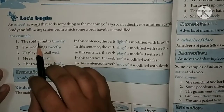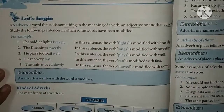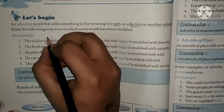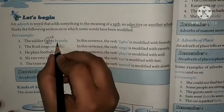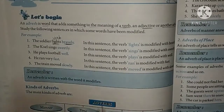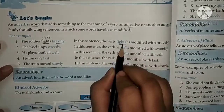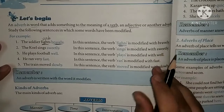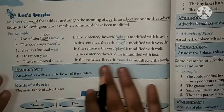Following are the examples. First sentence: 'The soldier fights bravely.' The action is 'fights' — that is the verb. The soldier fights — how? Bravely. So 'bravely' tells us about the verb 'fights'. In this sentence, the verb 'fights' is modified with 'bravely' — it adds extra meaning to 'fight'.